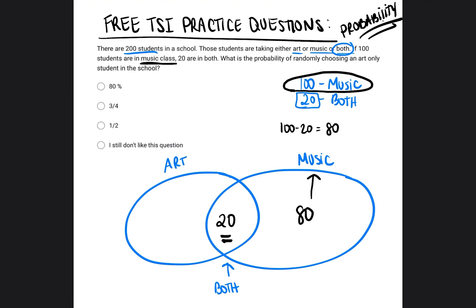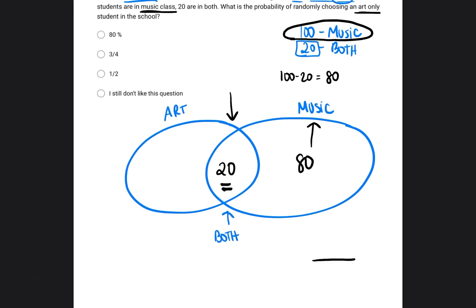So if there's 20 students already in the class that are taking both, how many students are in music only? So you would do 100 minus 20, and that would equal 80 students that are in music only. So we have 80 students that are only taking music. We have 20 students that are taking both. And then it says, what is the probability of randomly choosing an art-only student? The only way that we can find a probability, which is we're going to create a fraction where the total is on the bottom, and whatever we're looking for is on top, so art-only should be on the top. We don't have a number in the art-only bubble.